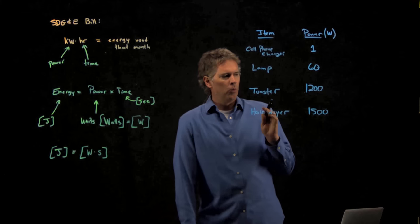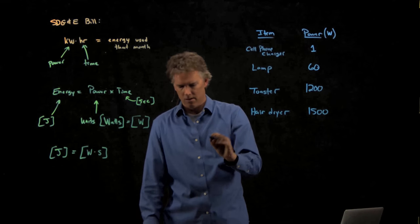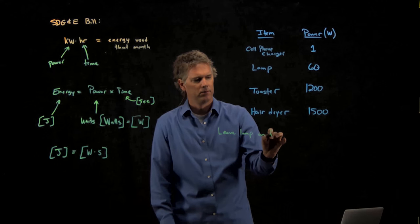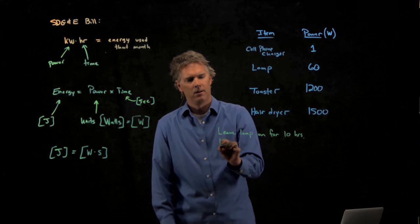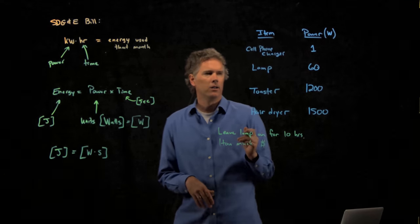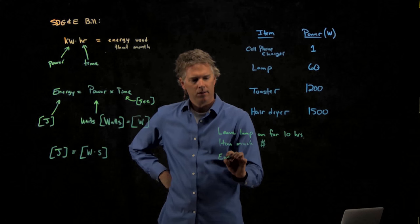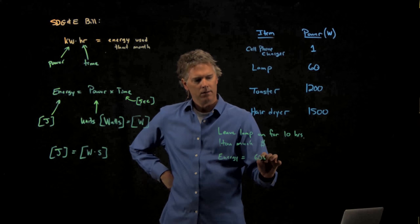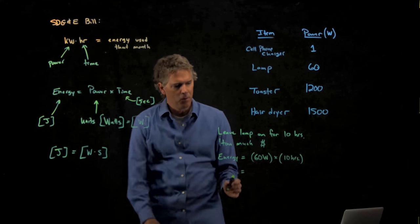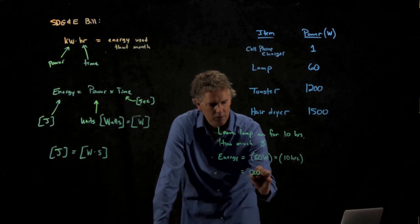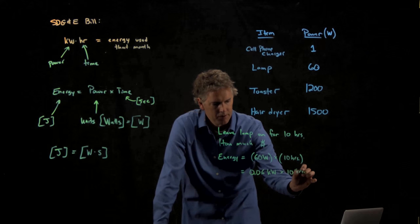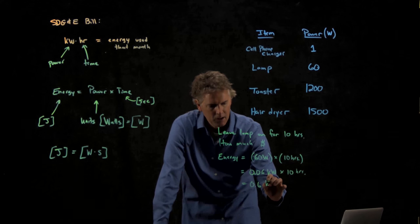All right. So when you turn on your lamp, let's ask the following question. Let's say you're going to leave the lamp on for 10 hours. How much does that cost? How much are you going to have to pay SDG&E for that electricity that you use? Well, let's figure it out. The lamp is 60 watts. The time we just said was 10 hours. 60 watts is 0.06 kilowatts. And we're going to multiply that by 10 hours. And so we get 0.6 kilowatt hours.